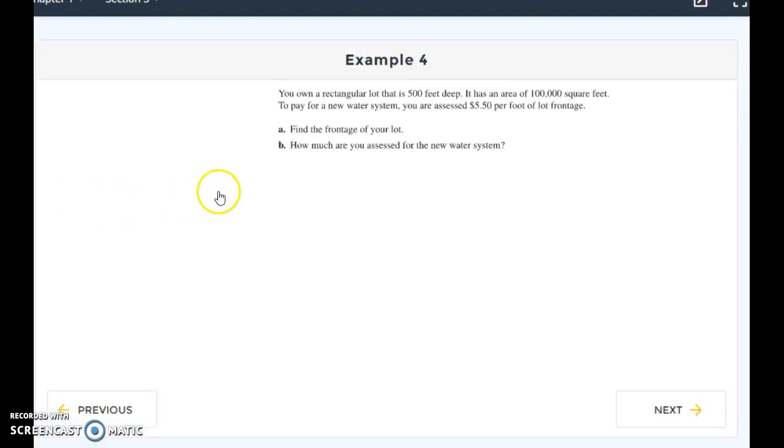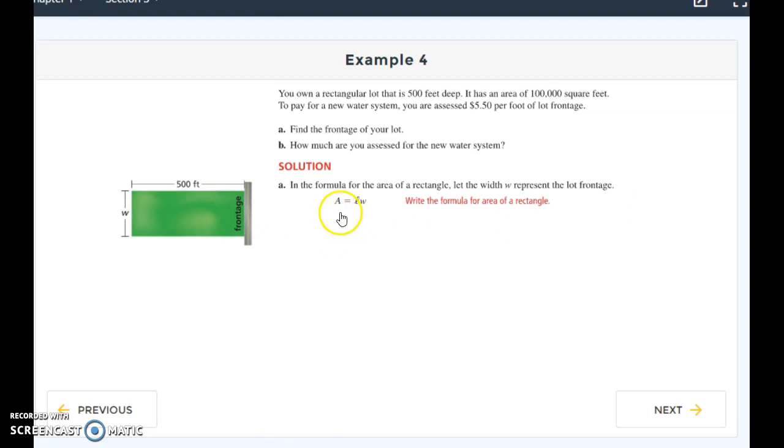So here's a word problem we can look at. We own a rectangular lot that is 500 feet deep. It has an area of 100,000 square feet. To pay for a new water system, I'm assessed $5.50 per foot of lot frontage. So the first thing I have to do is find the frontage of my lot. So here's a little picture of what I'm looking at, right? I always draw a picture to start with. So I know that it's a rectangle, so that helps me. And I know that it's 500 feet deep. And I know my total area. So I start with my picture and my area of a rectangle. And I know that A, the area, equals length times width.